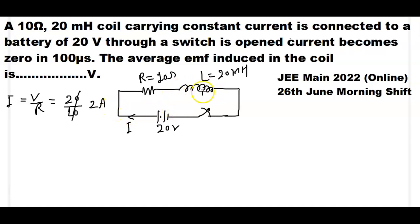And in steady state inductor behaves like a plain wire. When switch is open then current in the inductor becomes zero. So back EMF is induced in the inductor which opposes the change in current.